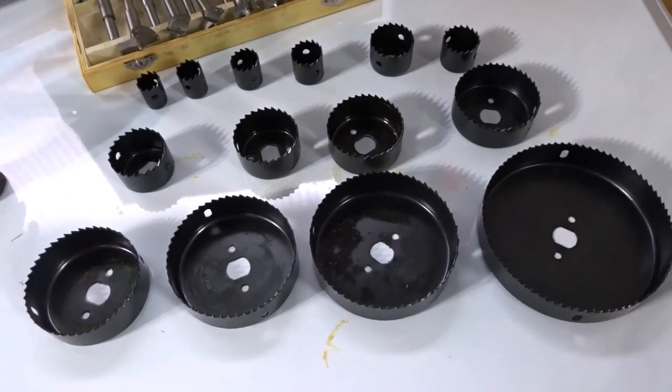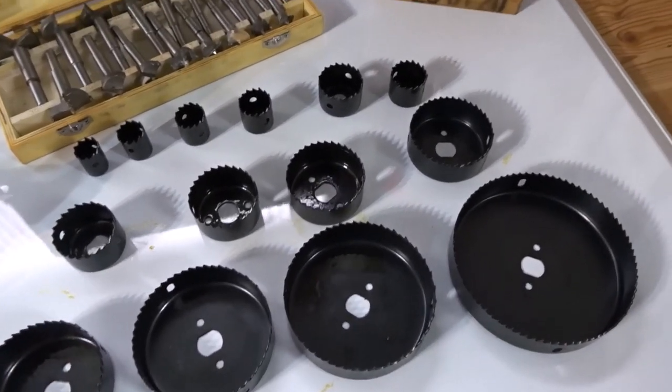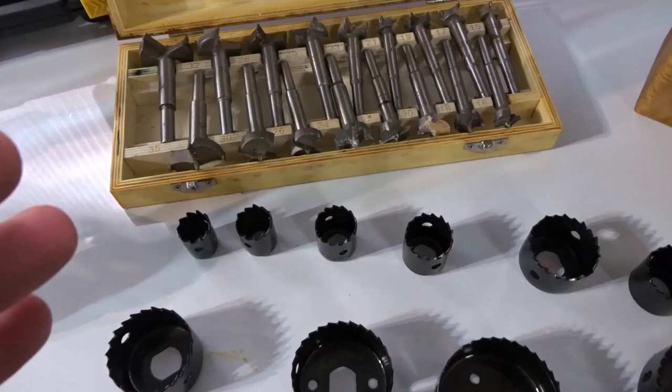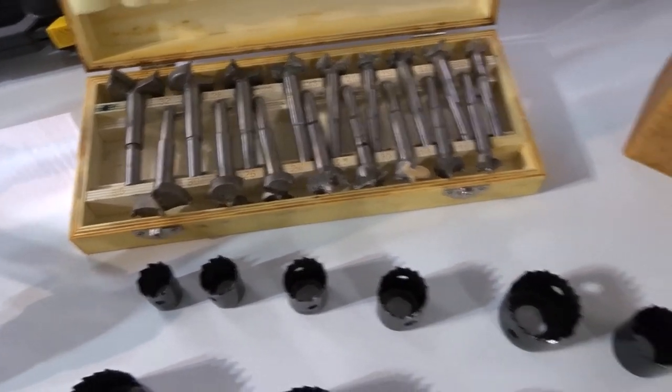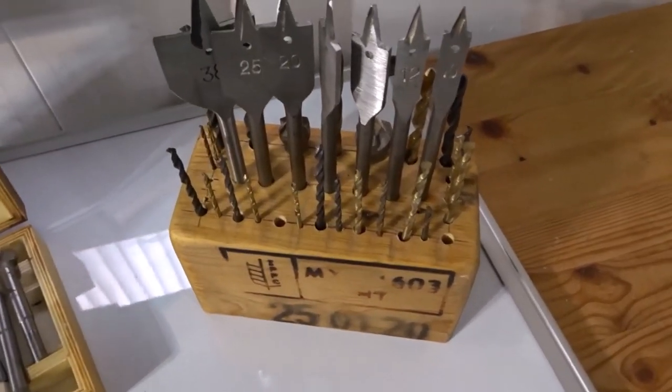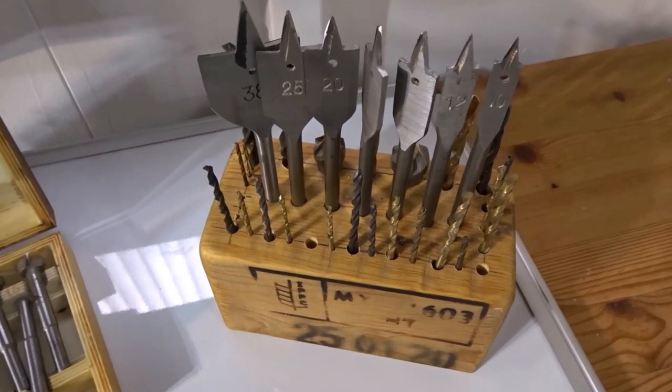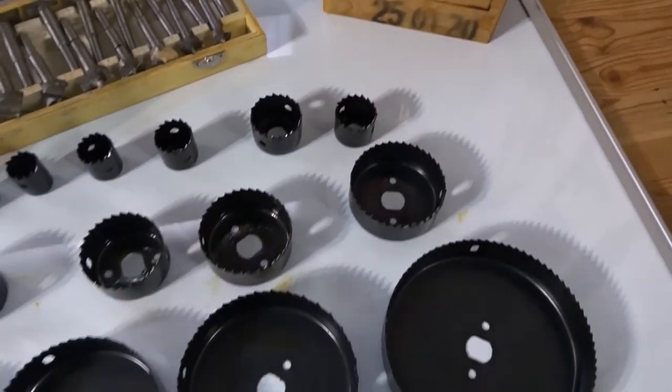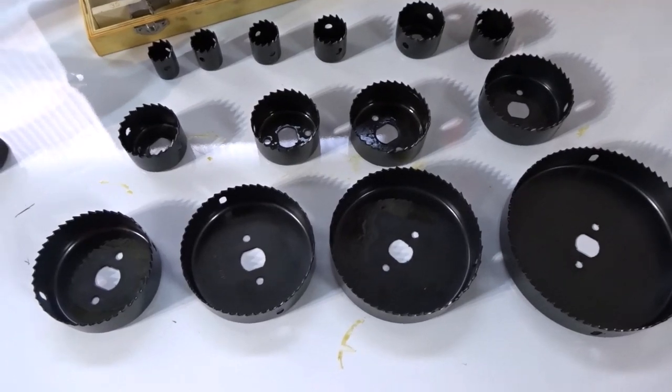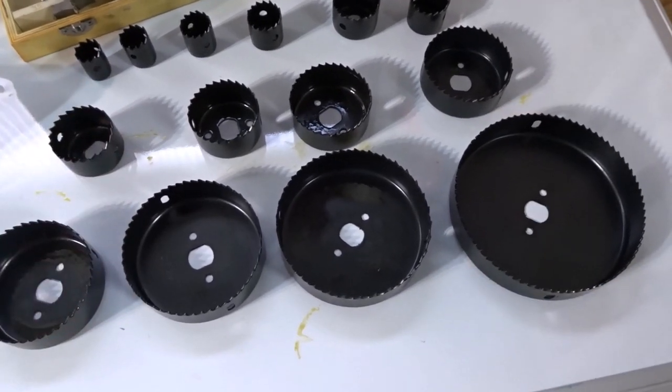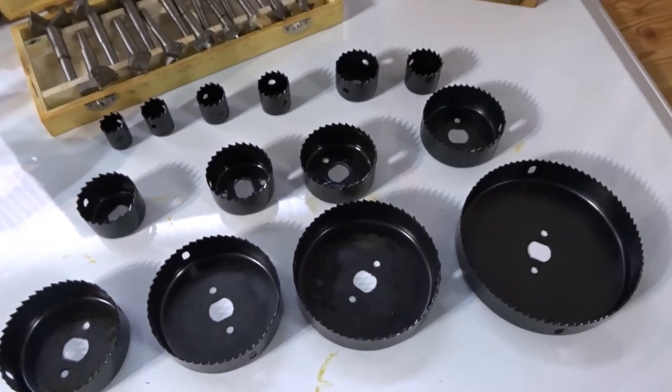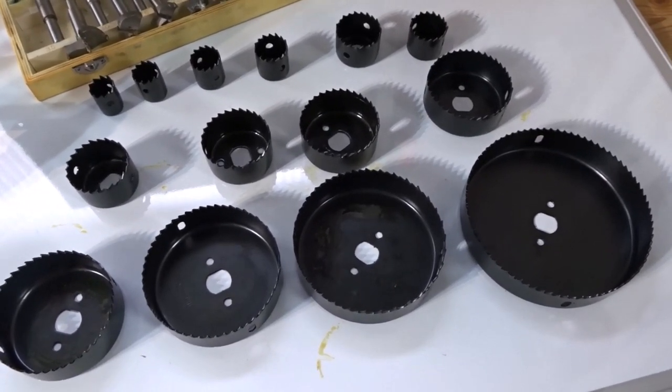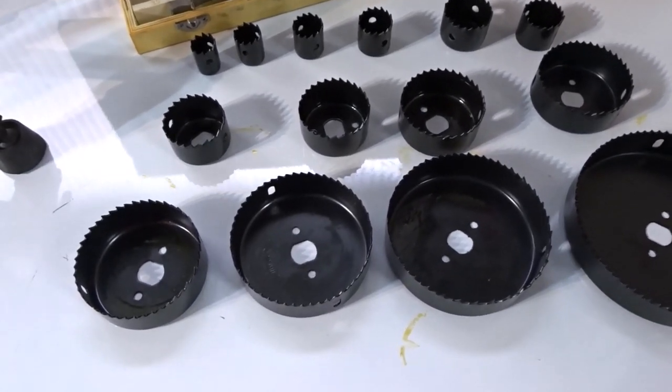So why did I want a hole saw kit? Well, I've got other bits that can do similar jobs, such as forstner bits—these are really good for cutting neat holes, but the size is limited. I use spade bits sometimes, but these cut rougher holes and again the sizes are limited. The biggest I've got is 38mm, whereas here with these hole saws they cut nice big holes in things like plastic, plasterboard, and soft wood. They definitely have their uses, and I'm sure I'll be using this in many future projects.